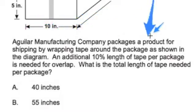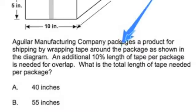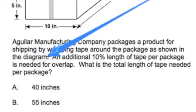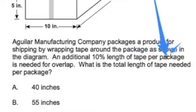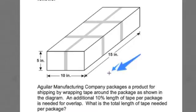Aguilera Manufacturing Company packages a product for shipping by wrapping tape around the package as shown in the diagram. An additional 10% of tape per package is needed for overlap. What is the total length of tape needed per package? So we're not dealing with volume or surface area. We're dealing with the length or distance of that packing tape. And that is reinforced in what I observed in the answer choices. And I can kind of see that with the diagram itself.